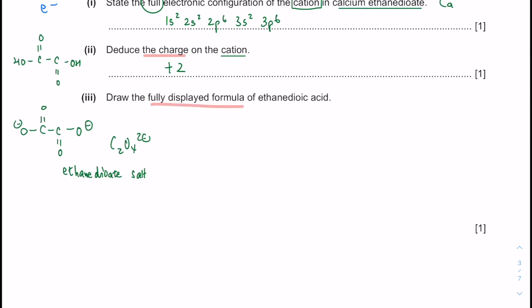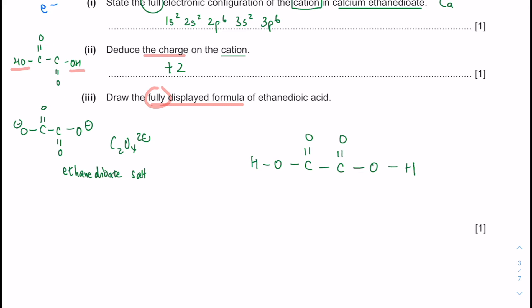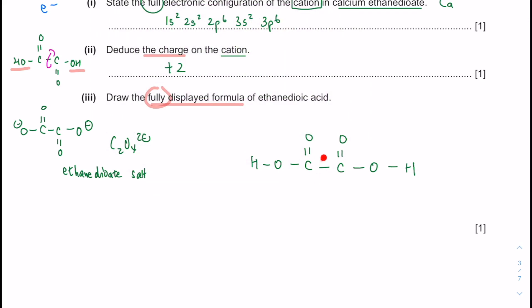The next one is fully displayed formula. Students always draw it partially but forget about the OH, which also has a single covalent bond — do not forget about that single covalent bond. The carbon-oxygen double bond can be drawn in different orientations because you can rotate about a carbon-carbon single bond easily. But the key point is to show all the covalent bonds in a fully displayed formula.